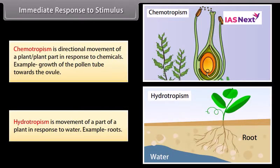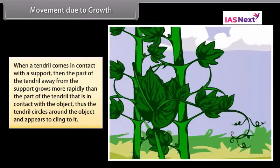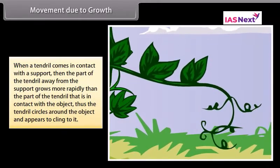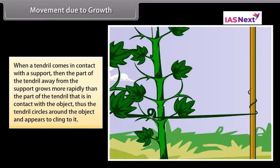Hydrotropism is the movement of a part of a plant in response to water. Example: roots. Movement due to growth: the tendrils circle around an object and appear to cling to it.